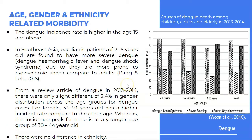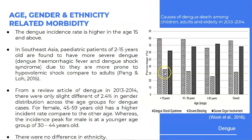The graph on the right side shows the causes of dengue death among children, adults, and elderly in 2013 and 2014, obtained from this review article. Patients less than 15 years old have slightly higher dengue shock syndrome compared to others, and severe bleeding is also slightly higher. Whereas severe organ involvement is more prevalent in patients aged more than 60 years old.